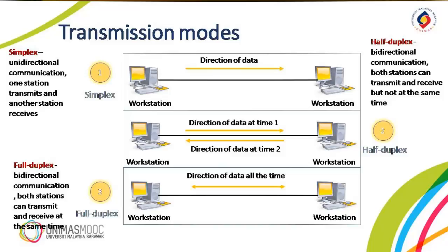Communication between two devices can be simplex, half-duplex, or full-duplex, as you can see in the figure here. In a simplex mode, the communication is unidirectional, as on a one-way street. Only one of the two devices on a link can transmit; the other can only receive, as you can see in the figure.